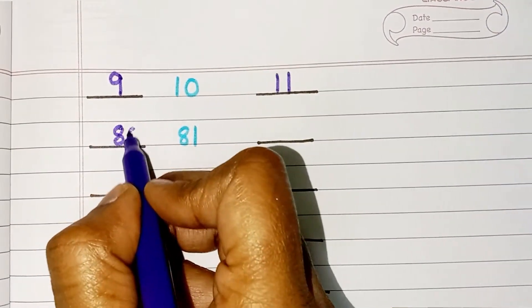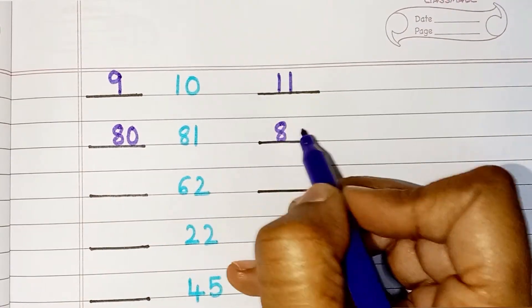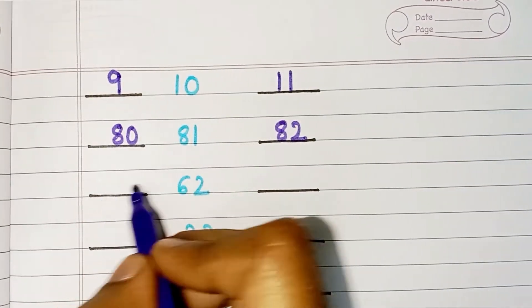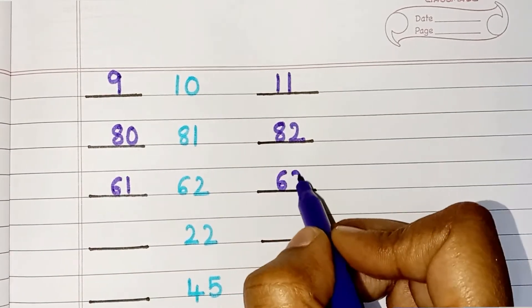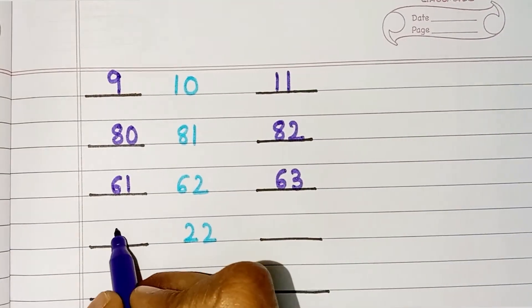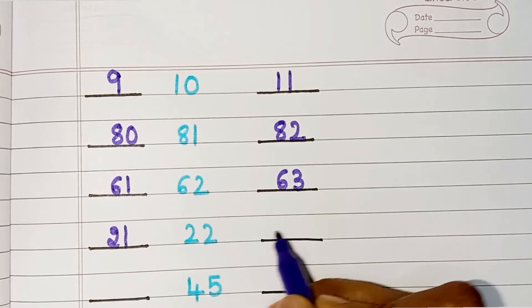Before 81, 80. After 81, 82. Before 62, 61. After 62, 63. Before 22, 21. After 22, 23.